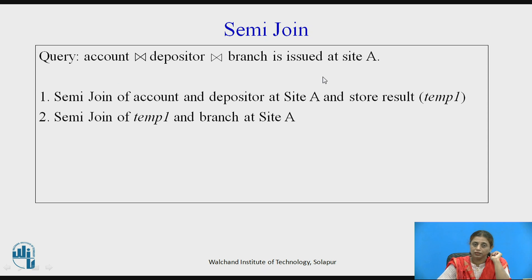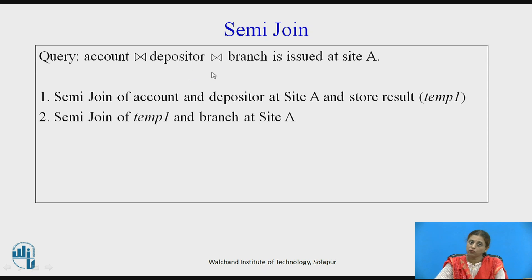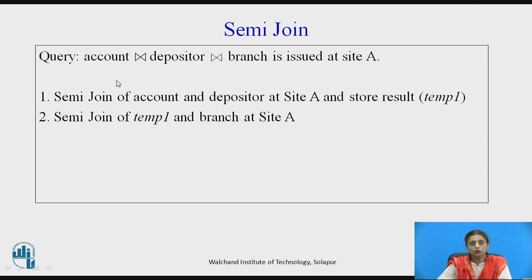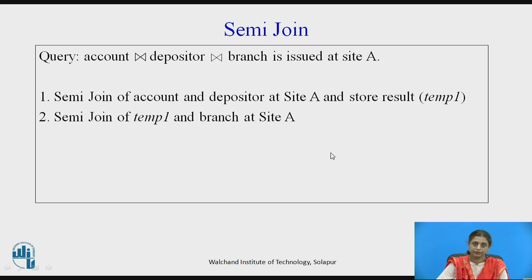Coming back to the original query — account join depositor join branch issued at site SA — using the semi-join strategy: first calculate the semi-join of account and depositor at site SA and store the result in temp1 at site A. After that, the semi-join of temp1 and branch is computed at site A to obtain the final result. Although multiple join operations are involved in the query, they are all resolved using semi-join, saving the cost of transmission.